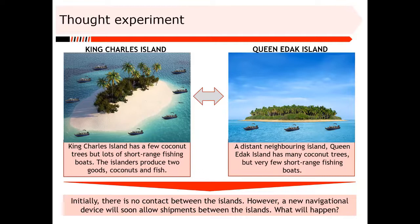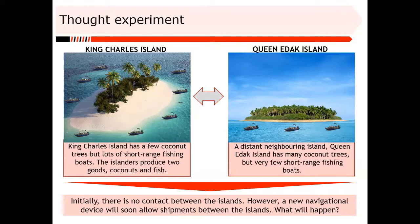On the first island — let's call it King Charles Island — there are a few coconut trees and a lot of fishing boats. The people get on their boats, go into the ocean, and catch fish they consume locally. On a second island some distance away — Queen Idak Island — there are way more coconut trees but fewer fish. Since there's no contact between the two islands, you can imagine what supply and demand for fish and coconuts looks like on each. The thought experiment: what happens if some navigational device now allows people to travel between the two islands?